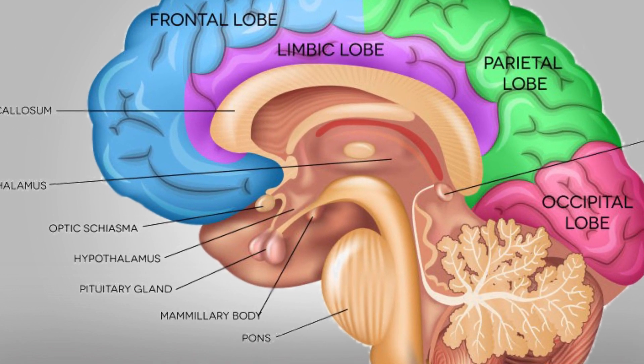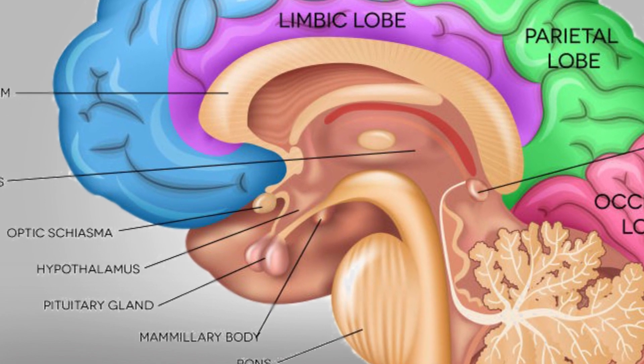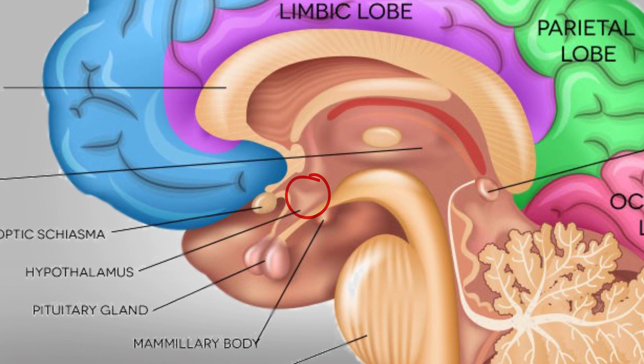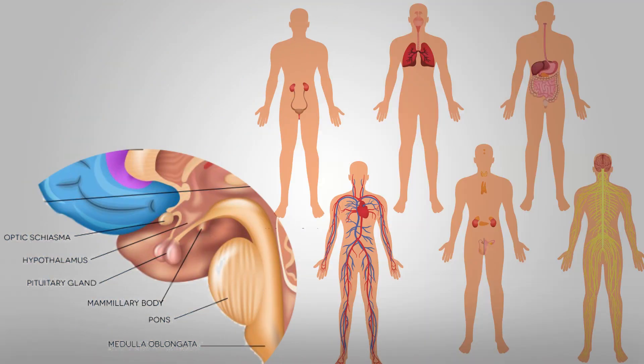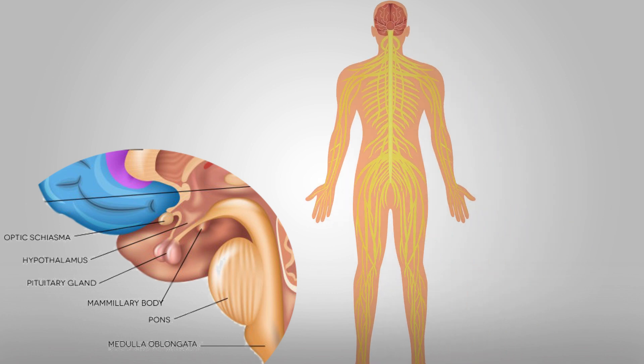This is a big part of the body, but it's very small. It's not really easy to see what it does. This is the pituitary gland. This is the hypothalamus and pituitary gland.